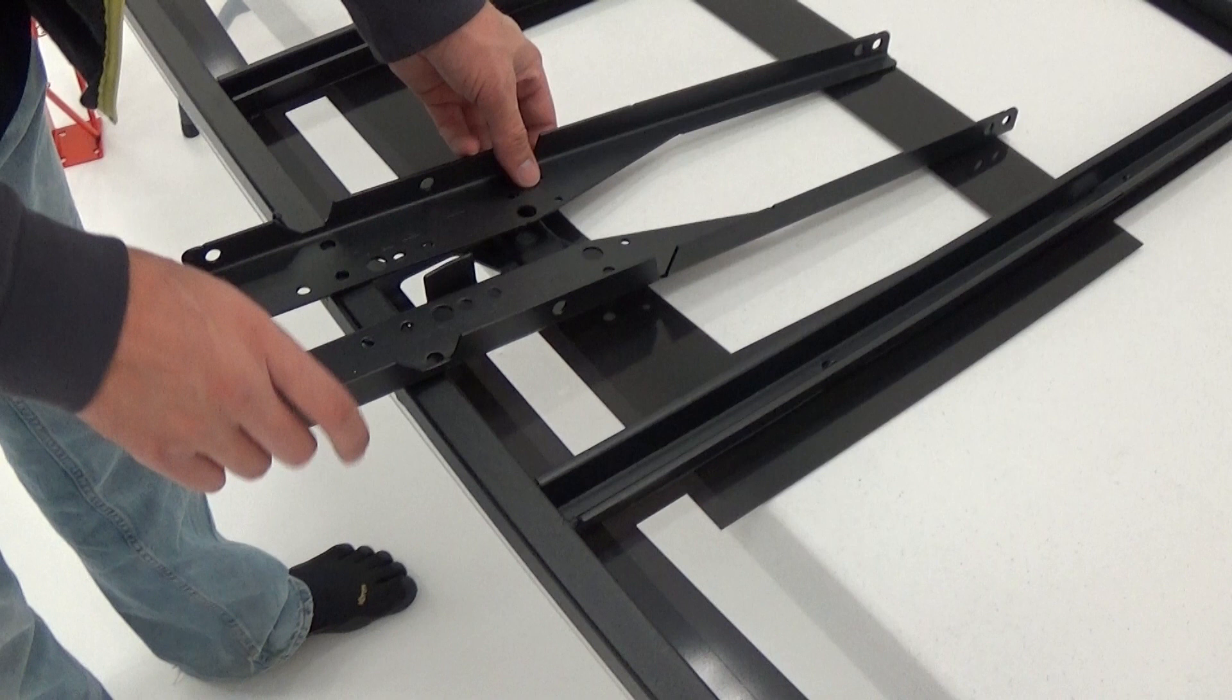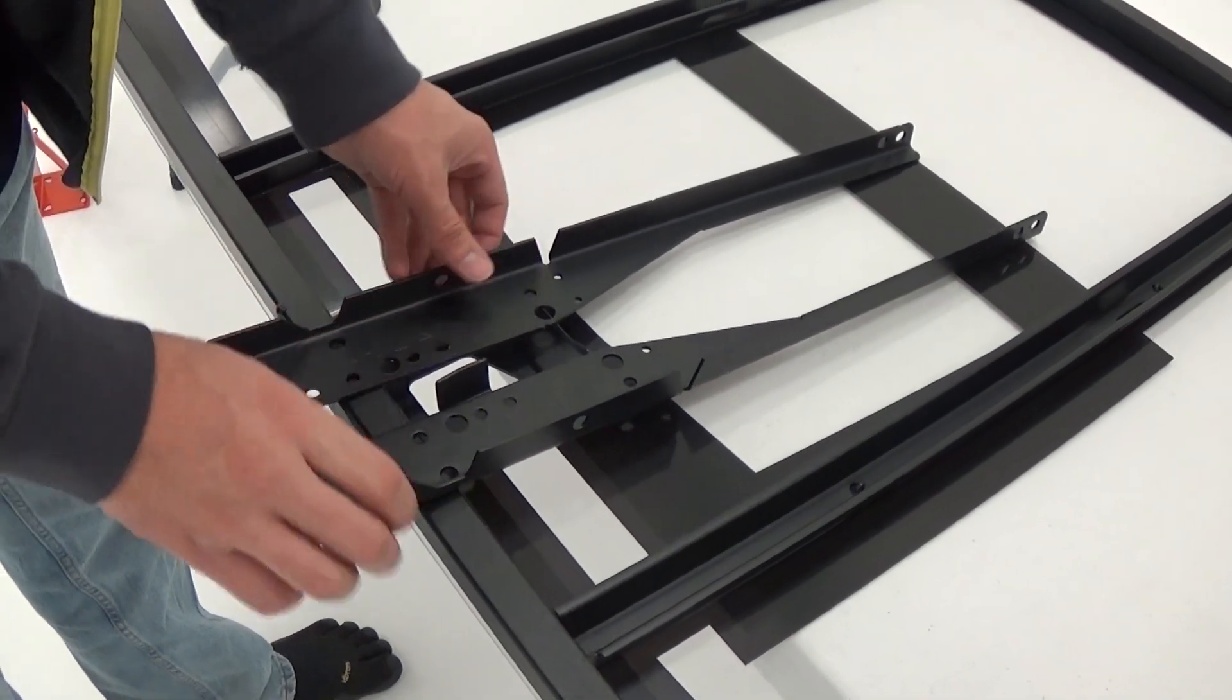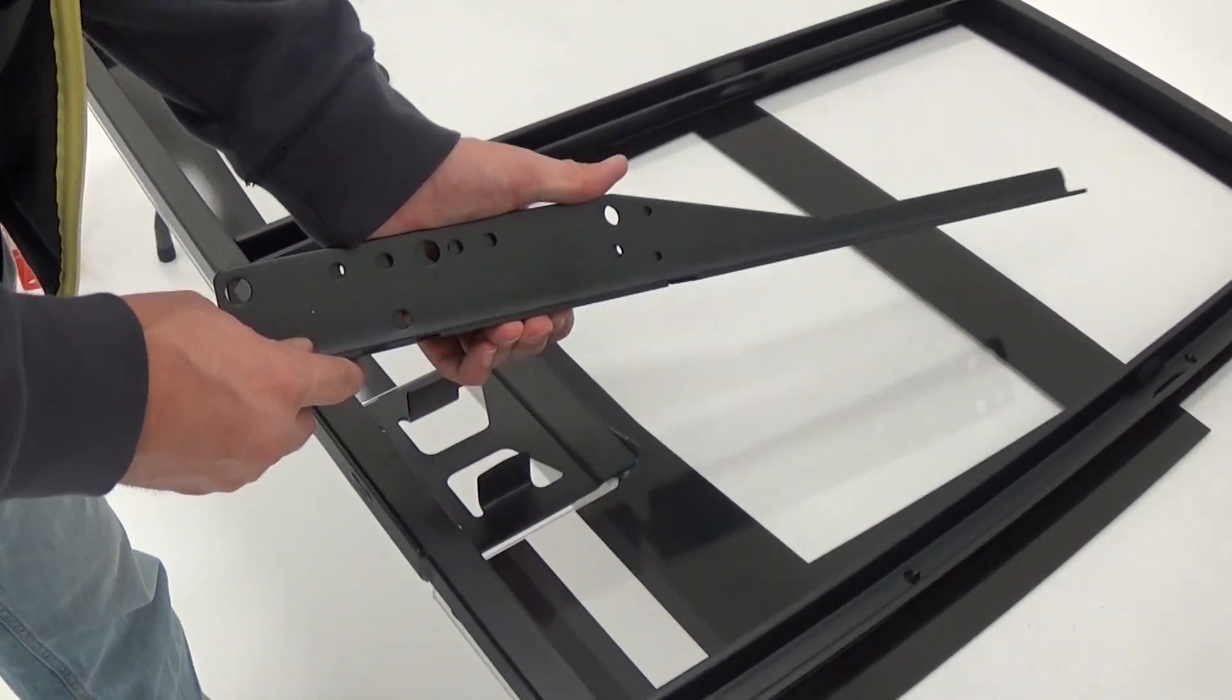In this instructional video we will be assembling the backboard and rim of a Lifetime basketball system. Your system may look different than the model shown but the steps performed will still apply.